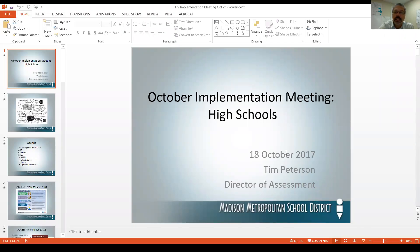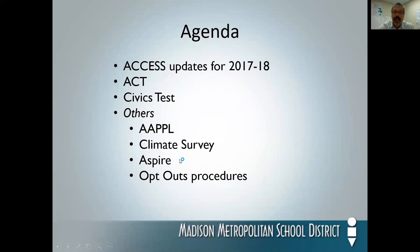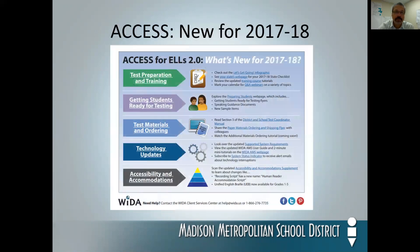This meeting originally took place on October 18th. The agenda for today is: we're going to review any changes to Access testing for this year, talk about changes in the ACT and WorkKeys, changes for the civics test, some shorter updates including the APPLE assessment which will be at all high schools at some point this year, DCYA and the climate survey, Aspire, and a review of the opt-out procedures.